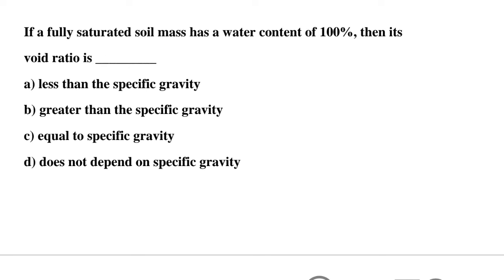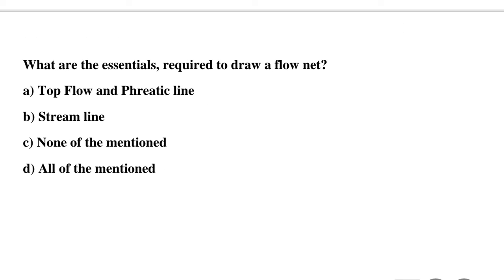Question 10: If a fully saturated soil mass has a water content of 100%, then its void ratio is — Option A: less than the specific gravity, Option B: greater than the specific gravity, Option C: equal to the specific gravity, Option D: does not depend on the specific gravity. The correct answer is Option C: equal to the specific gravity.